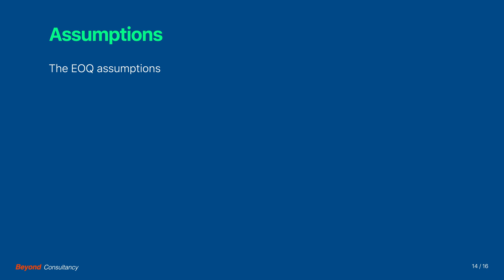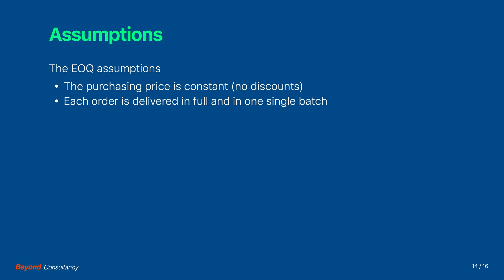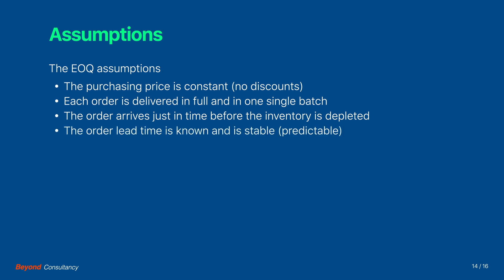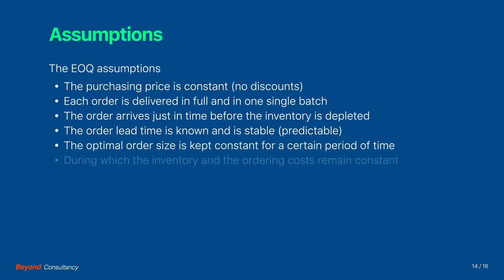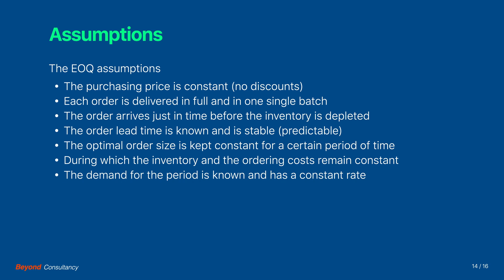Let us at this point summarize the EOQ assumptions. The purchasing price is assumed to remain constant — there are no cash nor quantity discounts involved. Each order is delivered in full and in one single batch. The order arrives just in time before the inventory is depleted, which implies that the order lead time is known and stable. The optimal order size is kept constant for a certain period of time, throughout which the inventory and the ordering costs also remain constant. Lastly, the total demand for the period is known and the rate of takeout is constant as well.